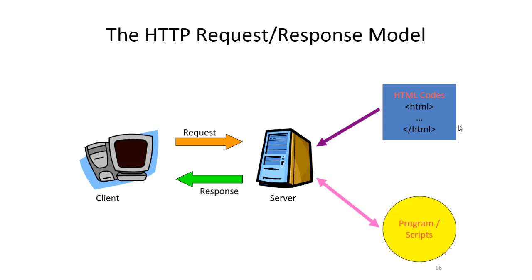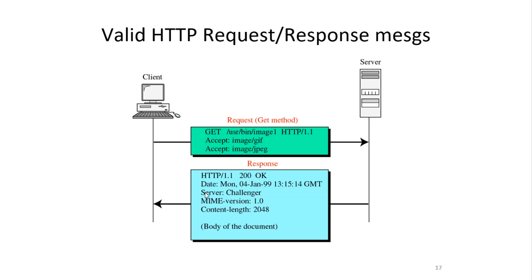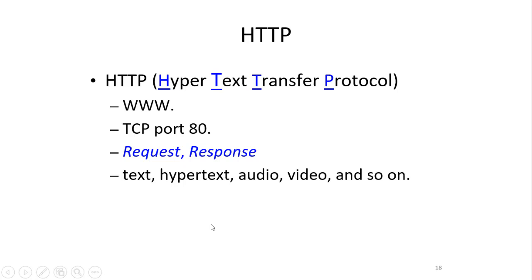In this model we can see how request and response communication works between server and client. First, the client presses a button on the website and sends a request to the server. The server then retrieves information from the code and sends back the response. This picture also shows valid HTTP request and response messages, including the GET method in the request and the response method.